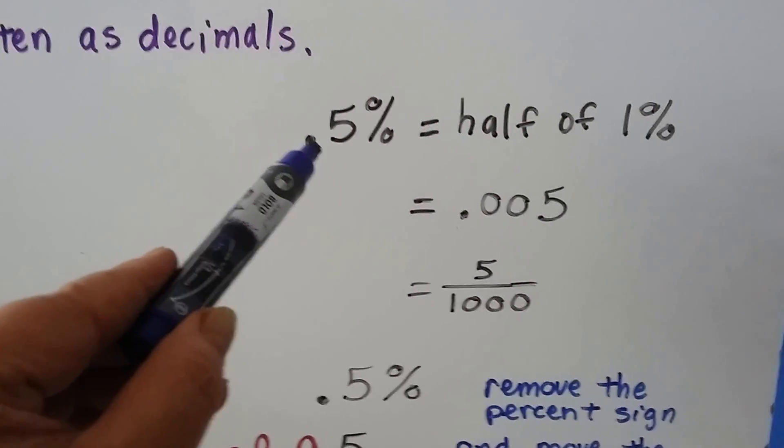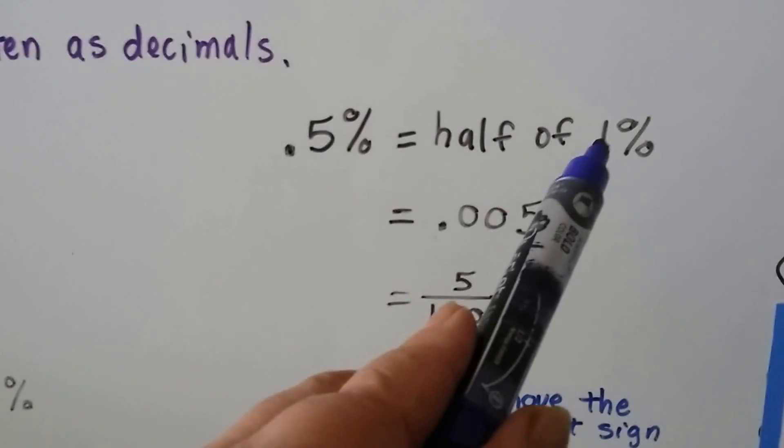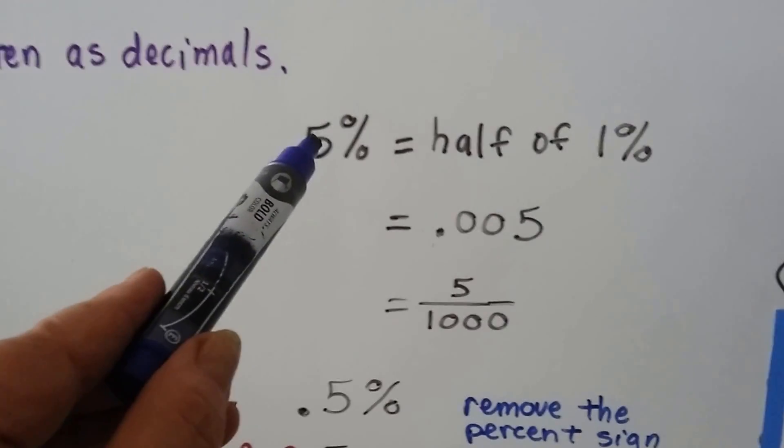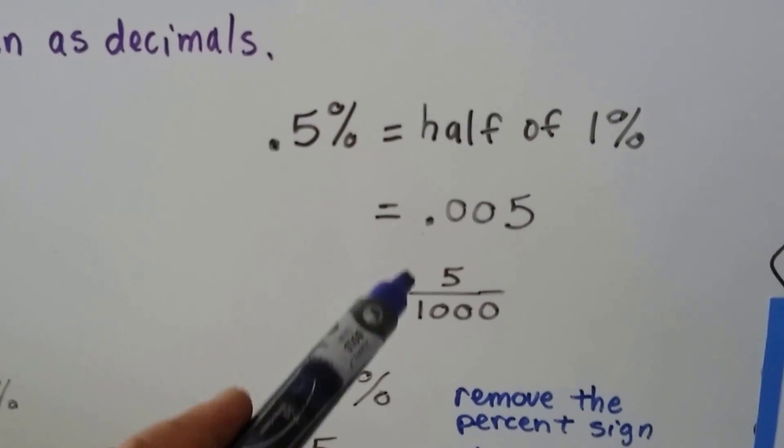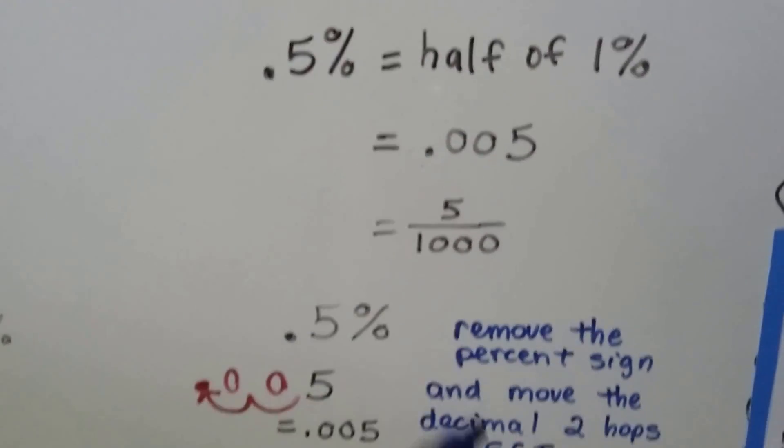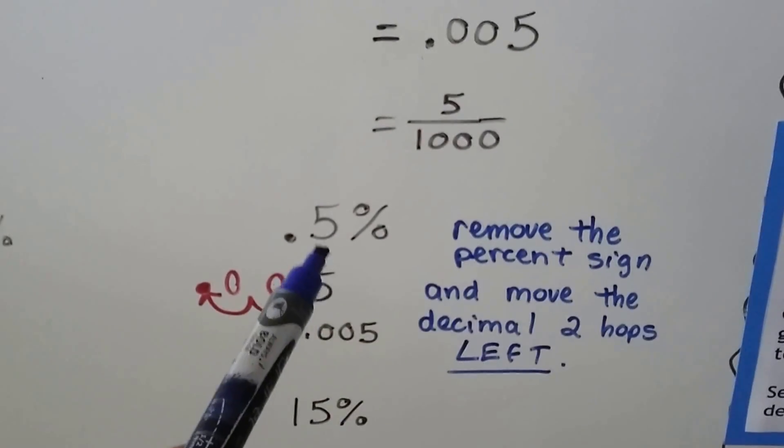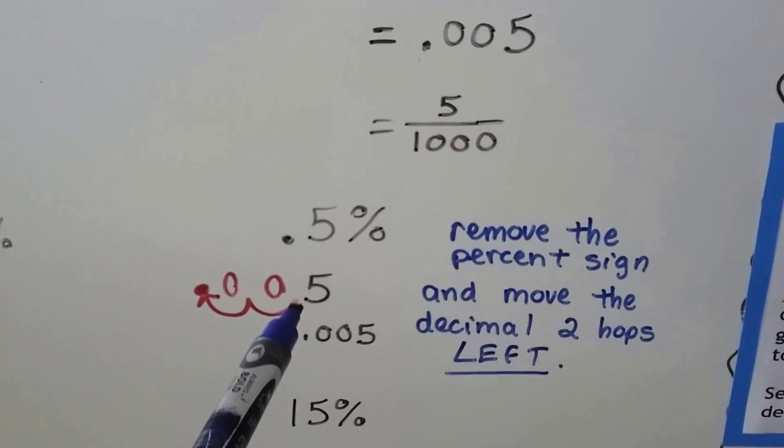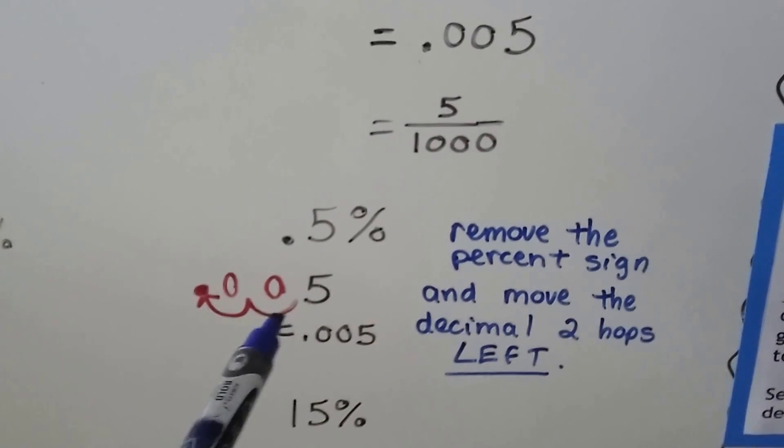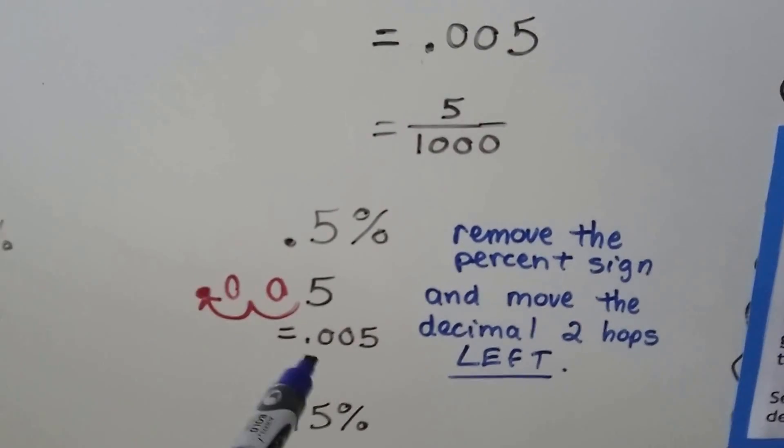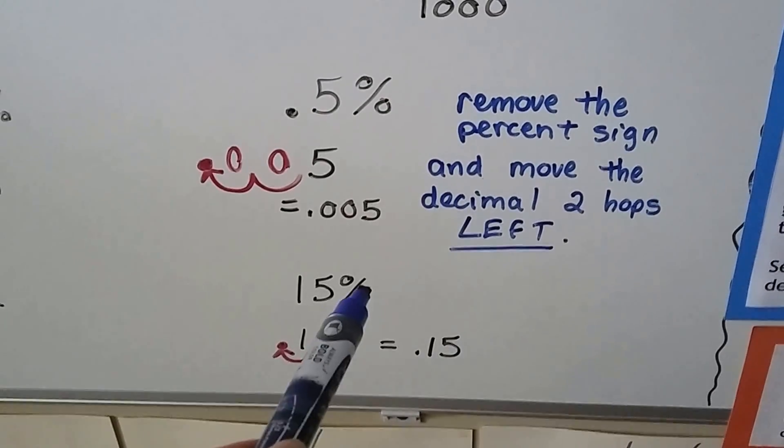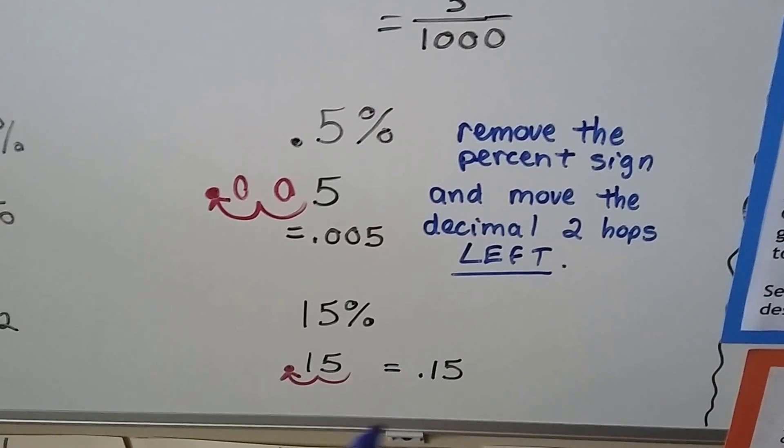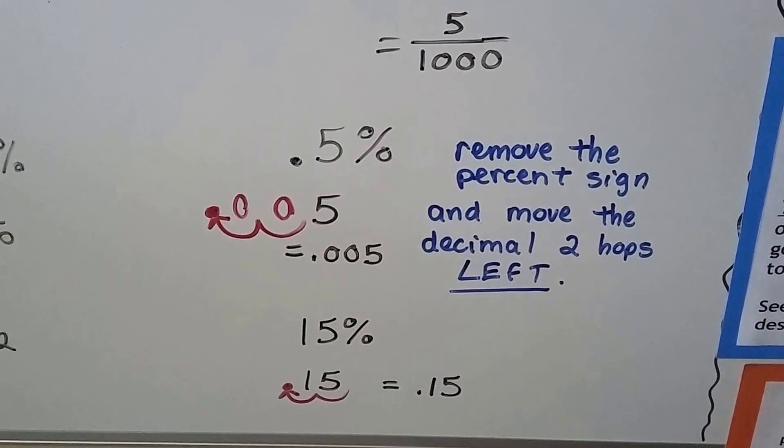And if you ever see a percentage that has a decimal in it, well, that's half of 1%. That's not even 1%, it's half of 1%. That's .005. That's 5 one-thousandths. What we're doing is we're removing the percent sign, and we're moving that decimal from here two places over to the left. So we get 5 thousandths. For the 15%, we remove that percentage sign and move the decimal place over, and that's how we got the .15. See?